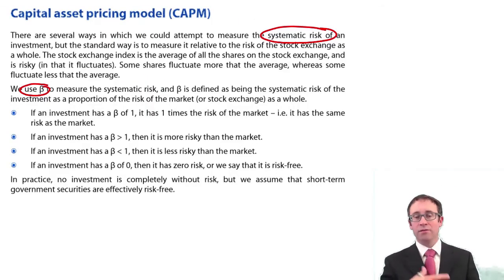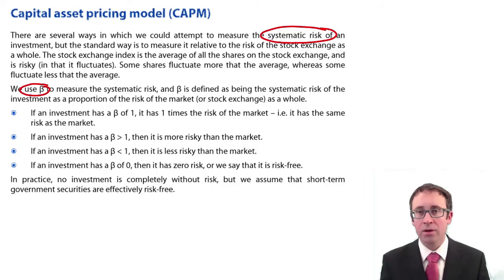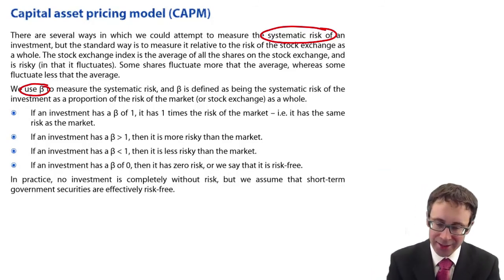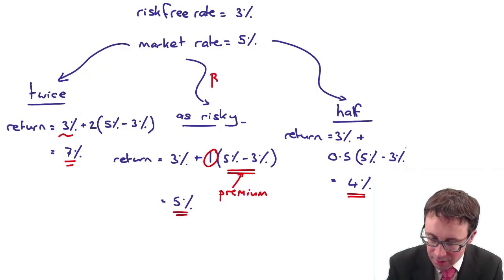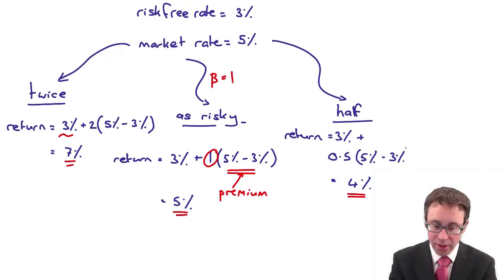Just to go through, finish this off before we look at the examples in the next video. Just a bit about the bullet points. If beta is equal to one, then that's saying that the investment has the same risk as the market. So that's the middle example there.